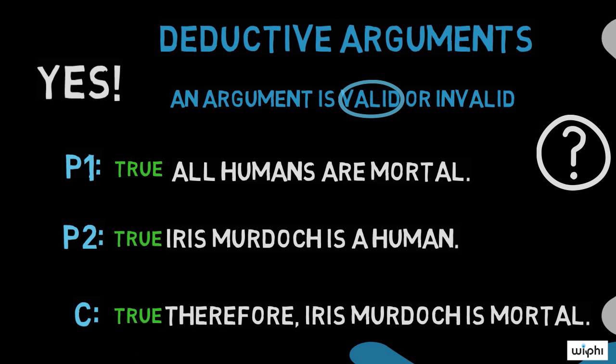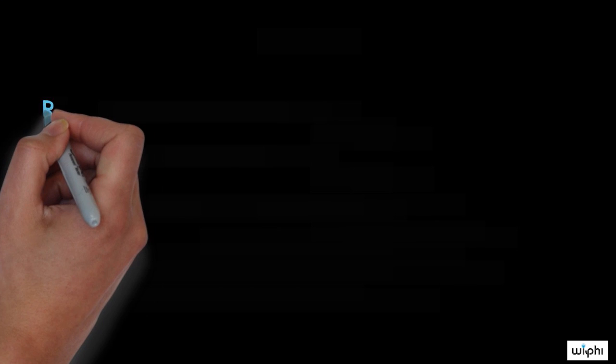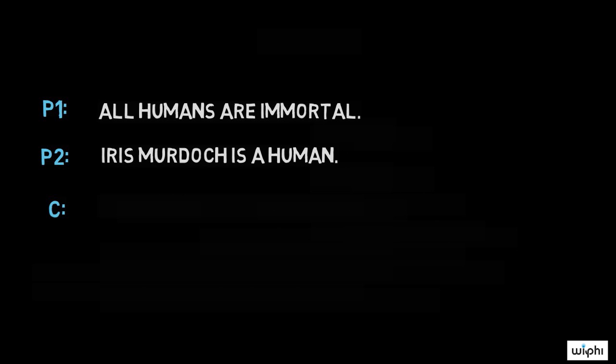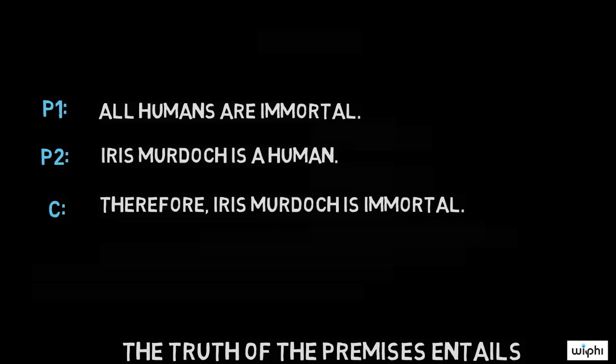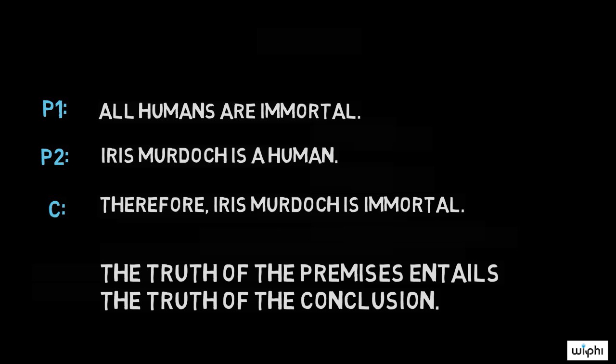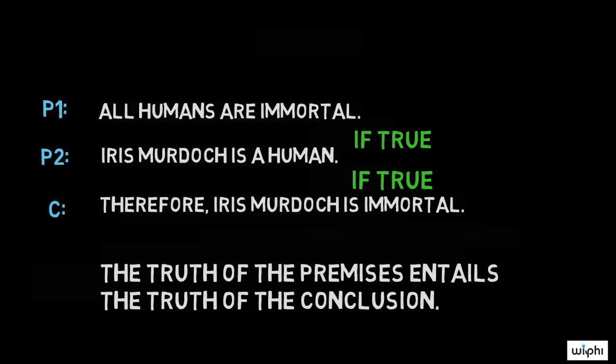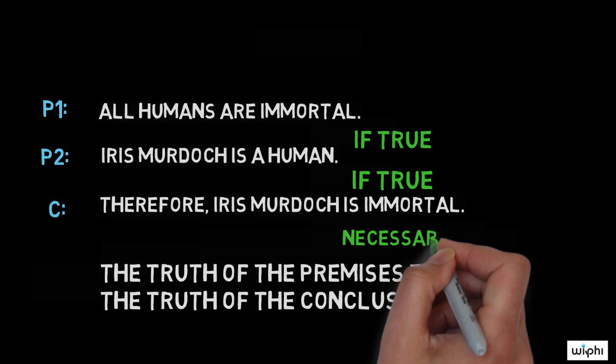Remember, it doesn't matter if our premises are true or false. Consider, for example, an argument with all false premises in it. P1: All humans are immortal. Premise 2: Iris Murdoch is a human. Conclusion: Therefore, Iris Murdoch is immortal. This argument is also valid, just like the first argument. The truth of the premises entails the truth of the conclusion, right? If it is the case that all humans are immortal, and it is the case that Iris Murdoch is one of these humans, then it's necessarily the case that Iris Murdoch is immortal.